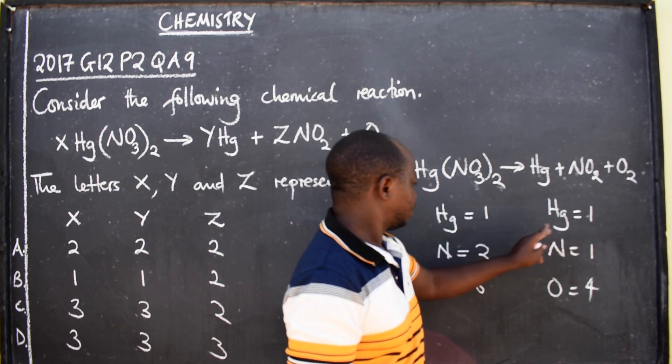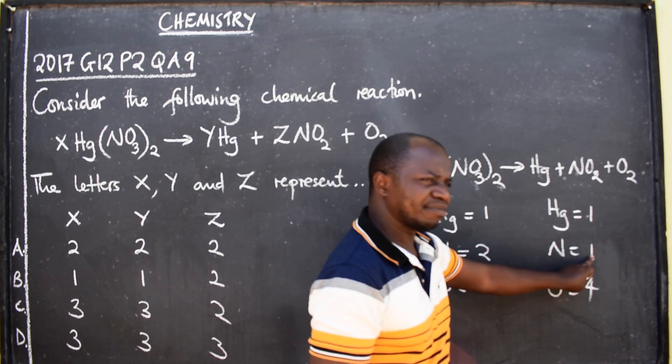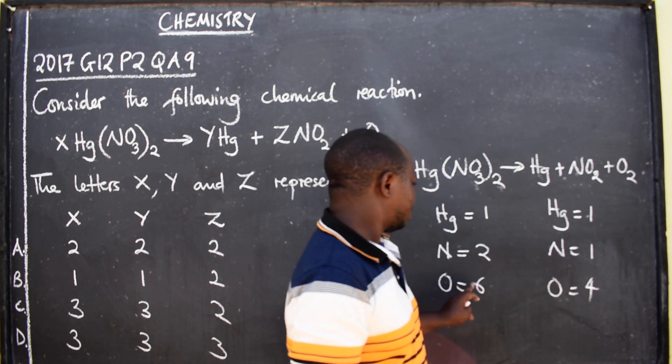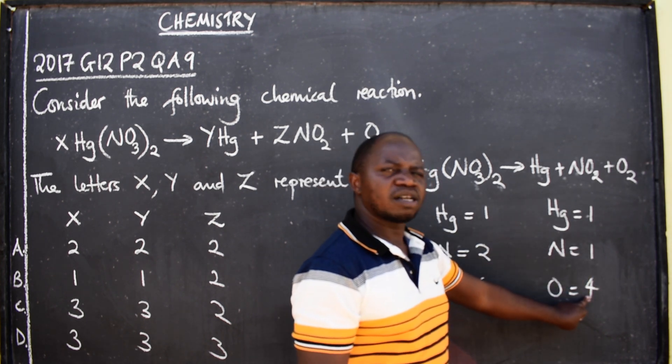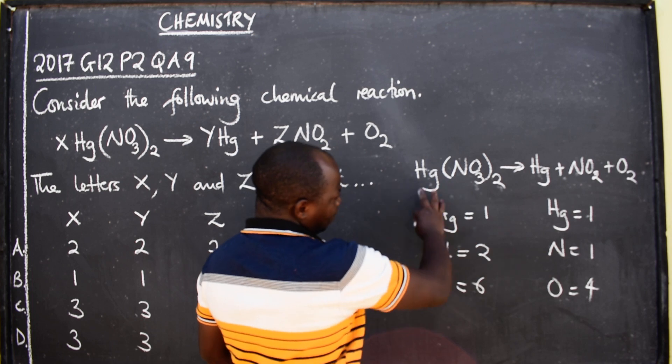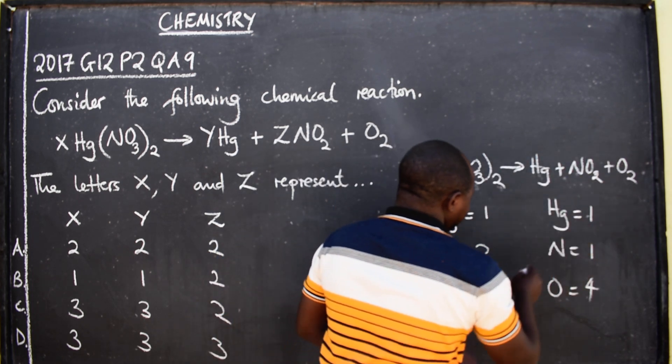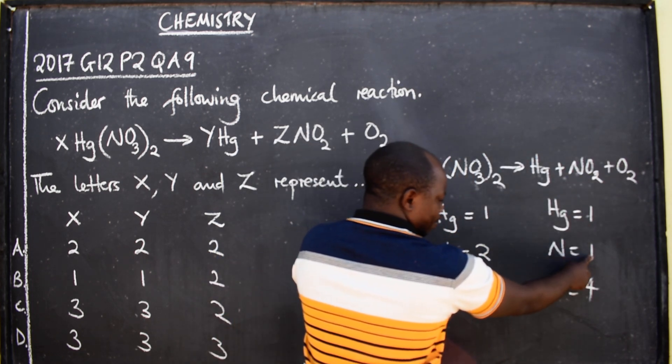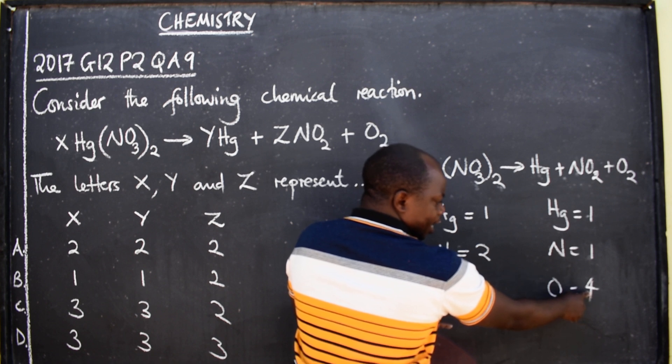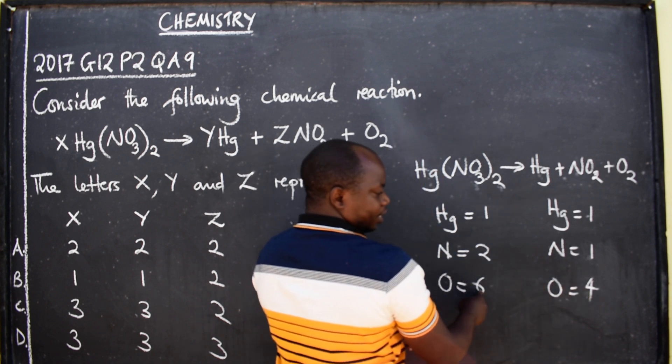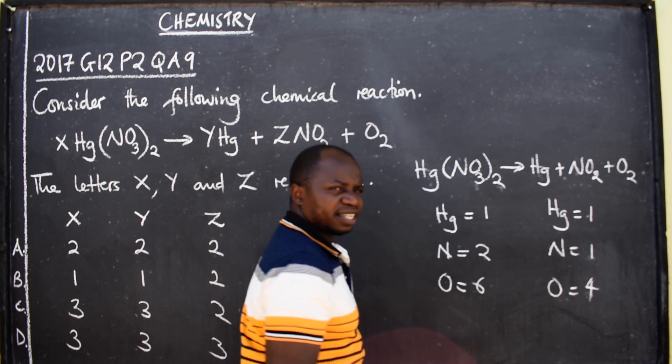In order for this chemical equation to balance, we need a two here for mercury. Here again we need to change so that we have six oxygen, just like that. That's the way we balance.